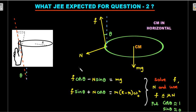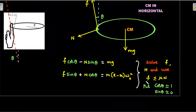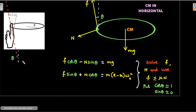In the vertical direction, since the CM doesn't move up or down, forces balance: the vertical components of friction and normal reaction balance the weight. In the horizontal direction, the horizontal components of friction and normal add up to provide the centripetal force for the CM's circular motion, with radius (R minus r). Rearranging and solving for f and N, for the critical condition we want the minimum angular velocity — so we apply the limiting friction condition: f less than or equal to mu times N. Since cos theta was not provided, JEE likely wanted us to assume theta is small.